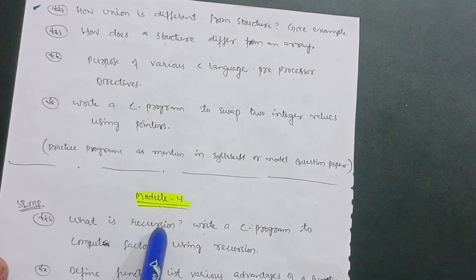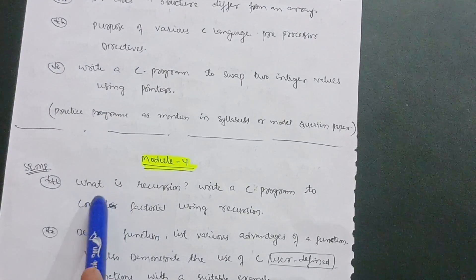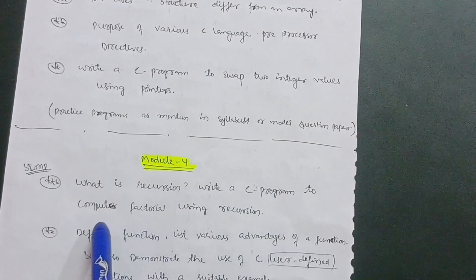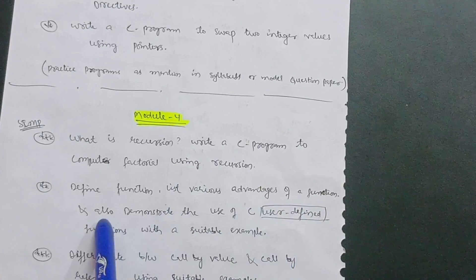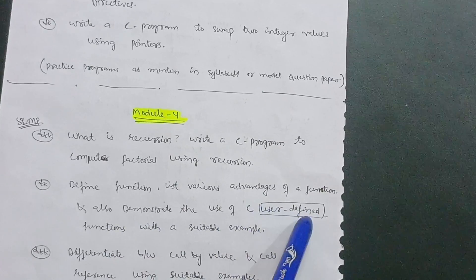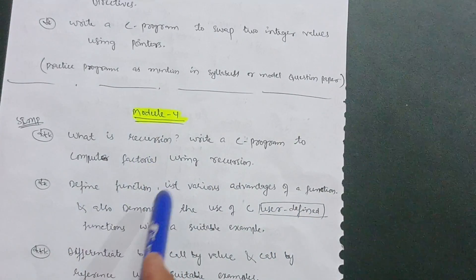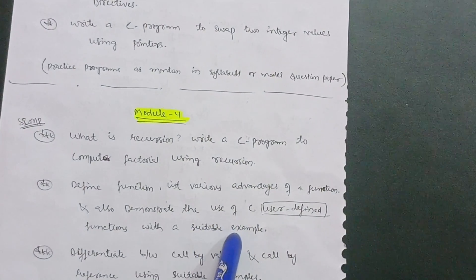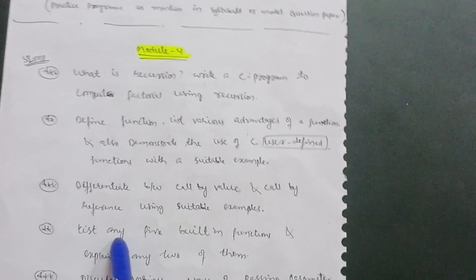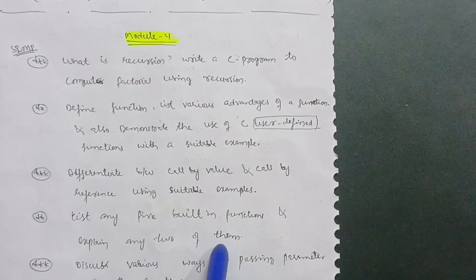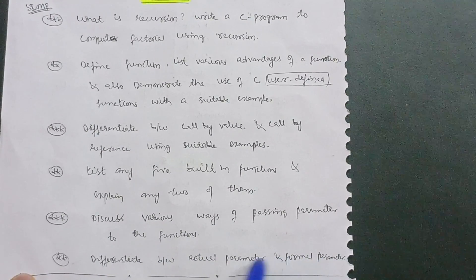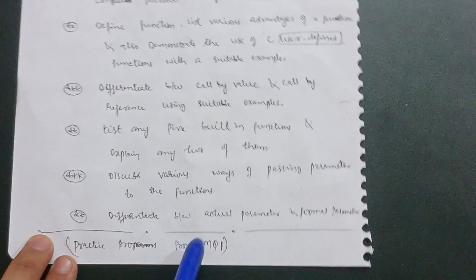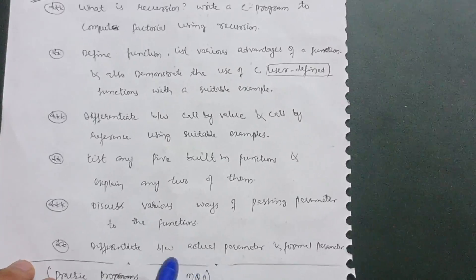Module four covers these super important questions: what is recursion — write a C program to compute factorial using recursion. Define a function, list various advantages of a function, and demonstrate the use of C user-defined functions with a suitable example. Differentiate between call by value and call by reference using suitable examples. List any five built-in functions and explain any two of them. Discuss various ways of passing parameters to functions and differentiate between actual parameter and formal parameter. Practice any programs from the model question papers.